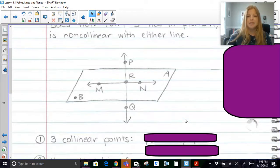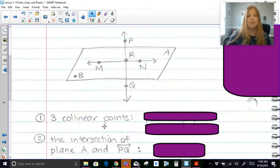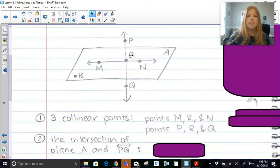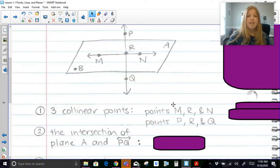Now based on your diagram, we should be able to answer some questions. If I said to you, from this diagram, name three collinear points, you would be able to say points M, R, and N are definitely collinear. Also P, R, and Q are collinear for sure.